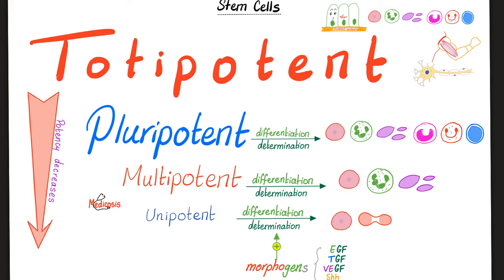Pluripotent can differentiate into red blood cells, neutrophils, platelets, monocytes, eosinophils, and even lymphocytes. Totipotent is like the CEO — it can give whatever it wants: neurons, muscle cells, all blood cells, epithelium to cover surfaces and line cavities, basement membrane, connective tissue, etc. As you go from totipotent down to unipotent, potency decreases; as you go up, potency increases.